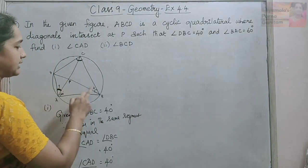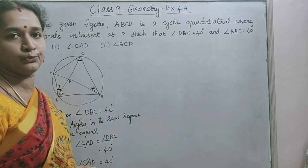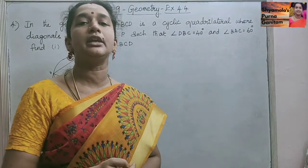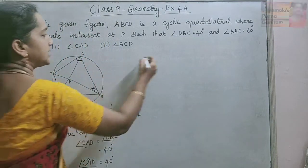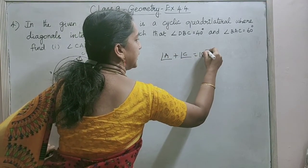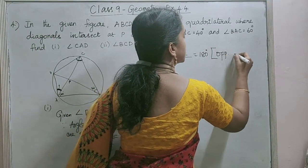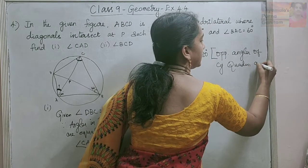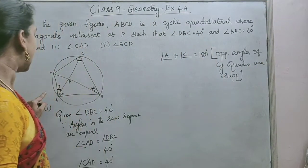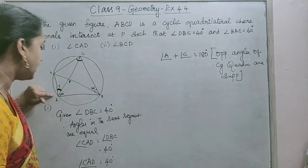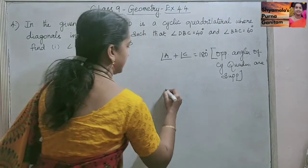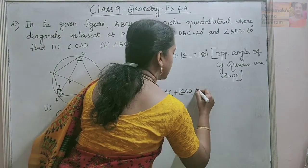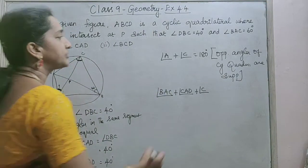The second part asks for angle BCD — that is the full angle BCD. For finding that, we use the cyclic quadrilateral property: the sum of opposite angles is equal to 180 degrees, that is, the angles are supplementary. So angle A plus angle C is equal to 180 degrees. Angle A can be split as angle BAC plus angle CAD. Angle BAC is given as 60 degrees, and CAD we just found as 40 degrees, plus angle C equals 180 degrees.